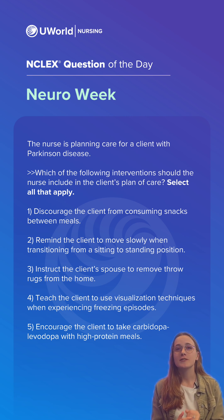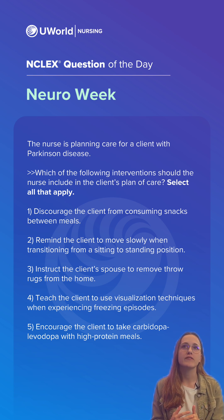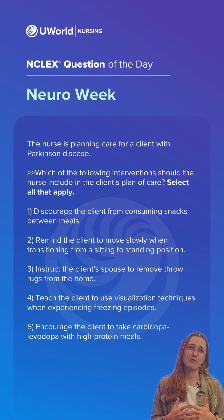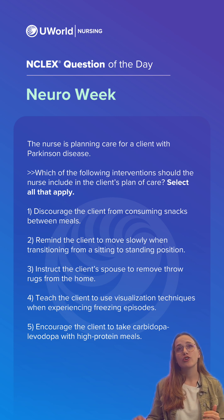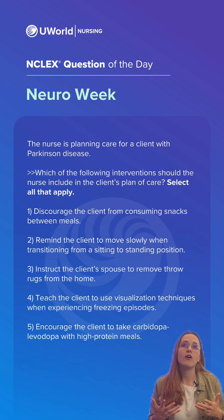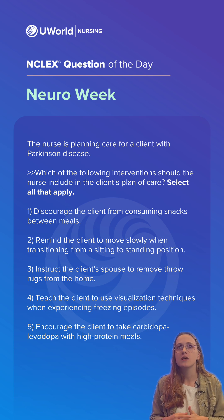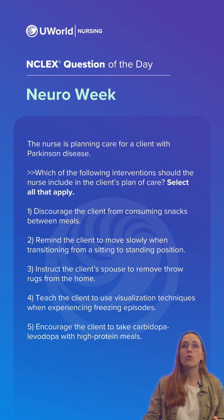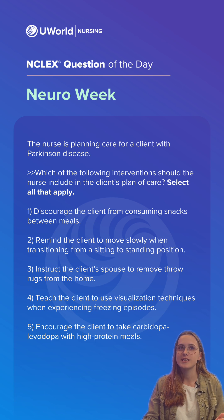So the correct answer options here are options two, three, and four. Parkinson's disease is a progressive neurodegenerative disorder that involves degeneration of the dopamine-producing neurons and formation of abnormal protein clusters — Lewy bodies — in the brain. This impairs the ability to create coordinated and refined movements. Indicated interventions include option two: moving from sitting to standing slowly to prevent falls related to orthostatic hypotension. Option three: removing throw rugs to avoid tripping and preventing falls. Option four: visualizing stepping over an imaginary object or walking to the tempo of a song to minimize the length of freezing episodes.